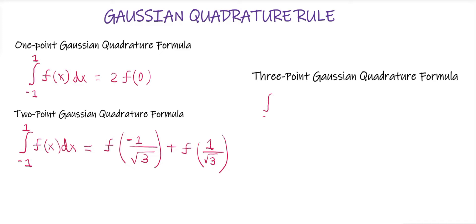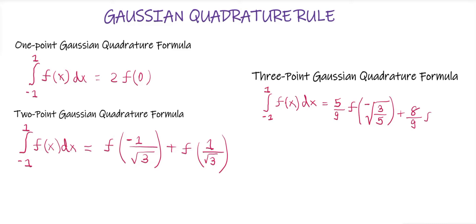The three-point Gaussian quadrature formula is: integration of f(x) dx from minus one to one is equal to five by nine into f of minus root three by five, plus eight by nine into f of zero, plus five by nine into f of root three by five. You will have to remember all three of these formulas.